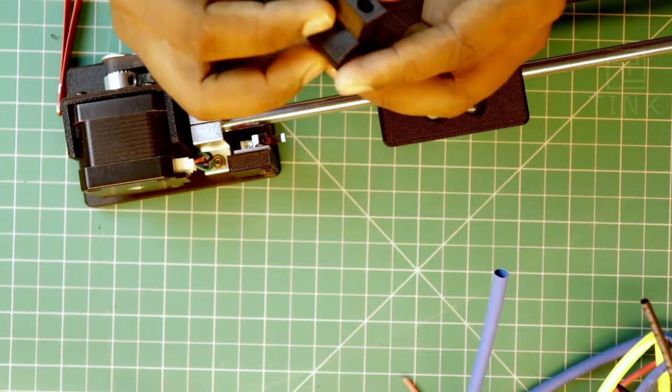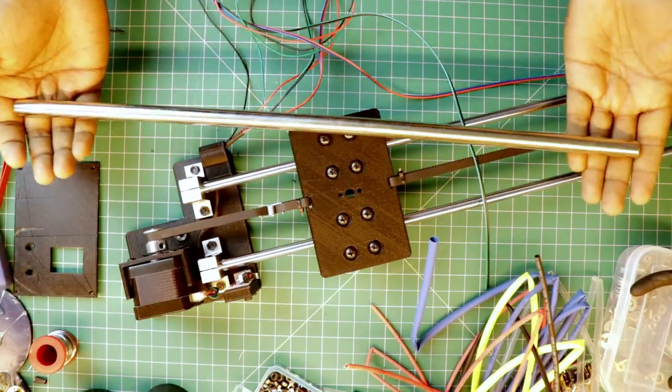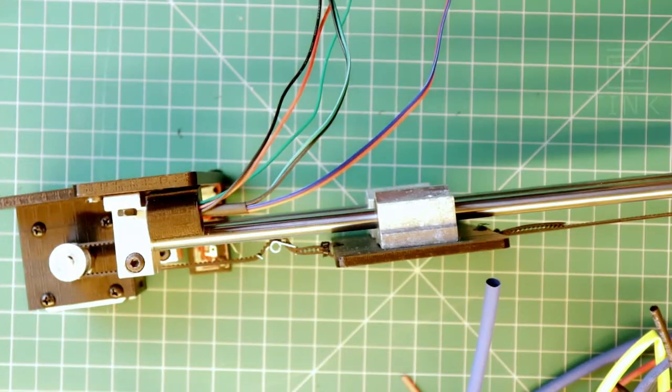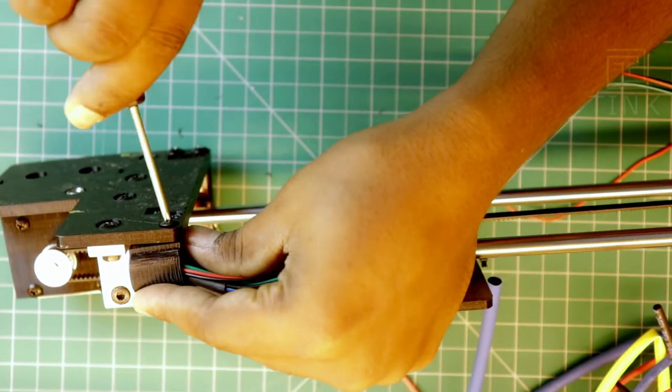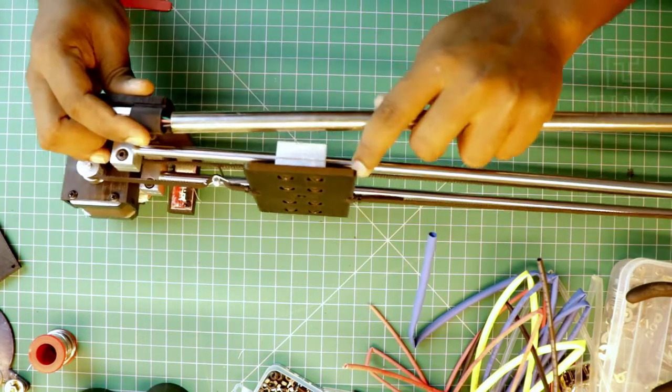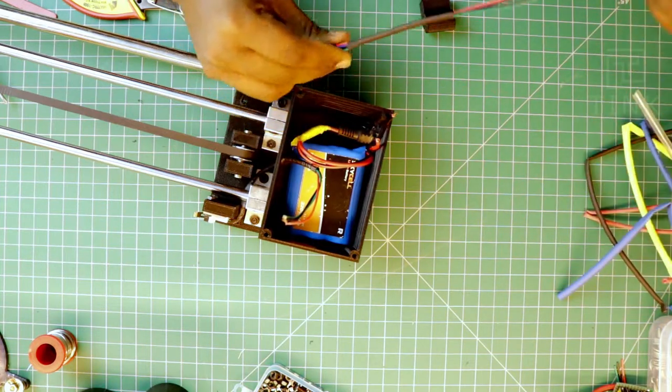Now I have got the wires from the motor end to the electronic circuit end. For a professional look, I am going to use steel rods to get the cables from one side to the other. I have got 3D printed brackets to support the rod at both ends.